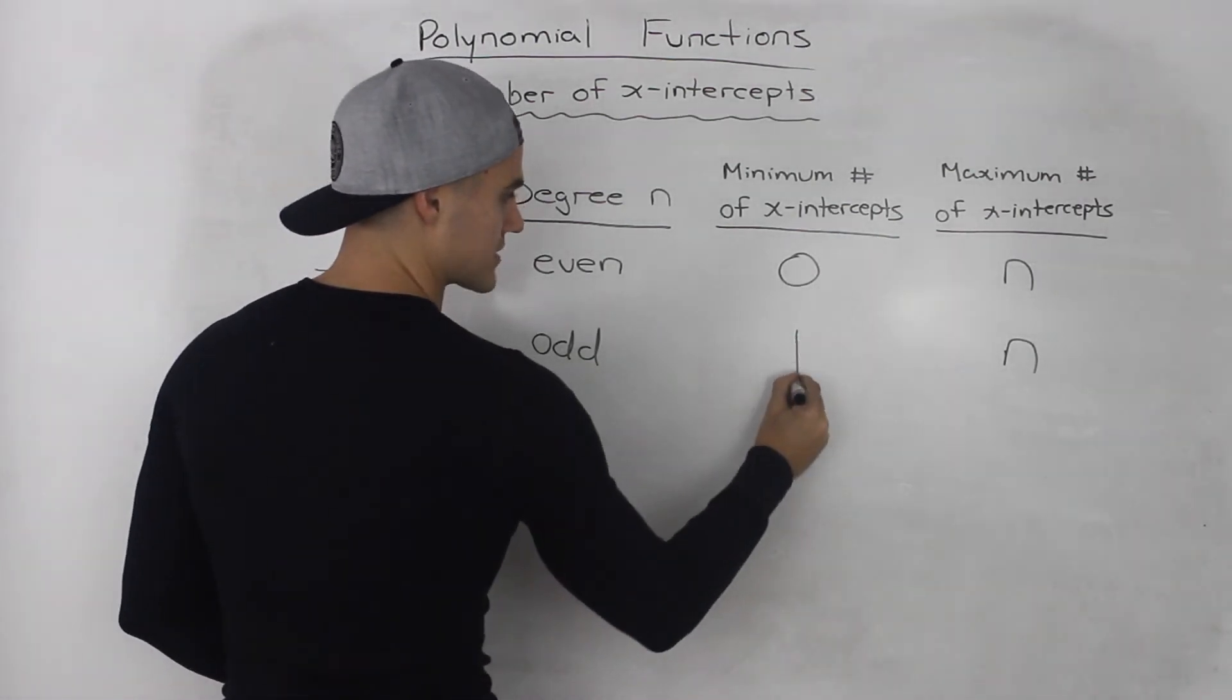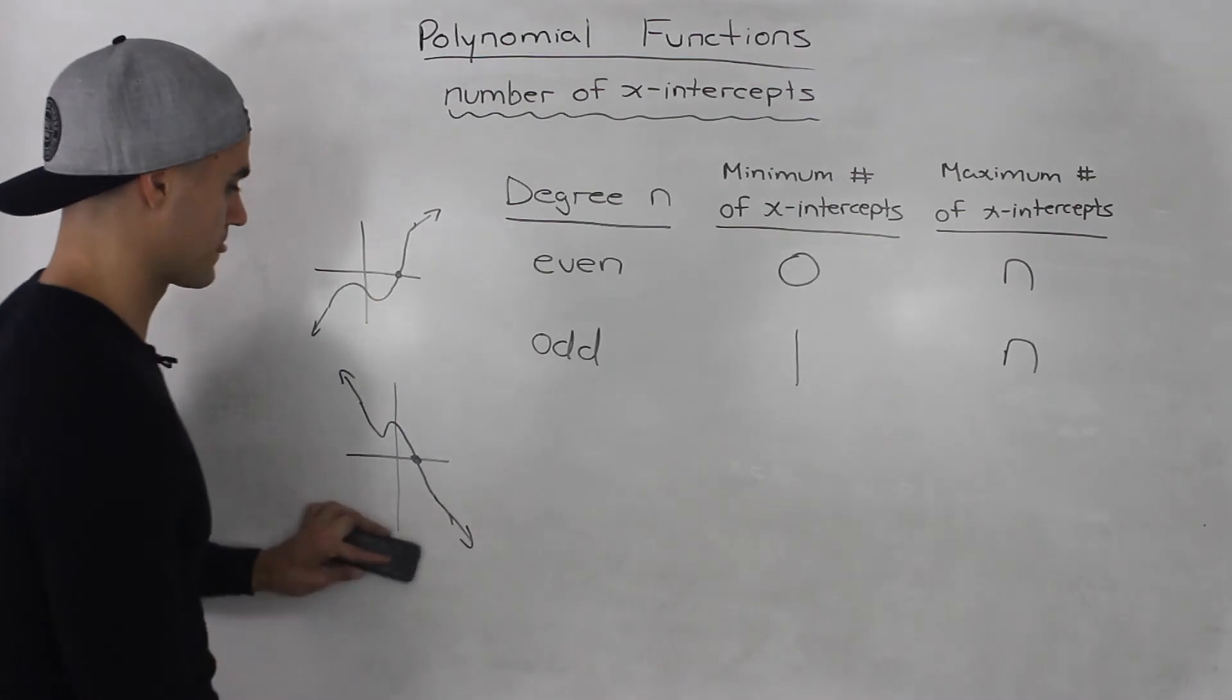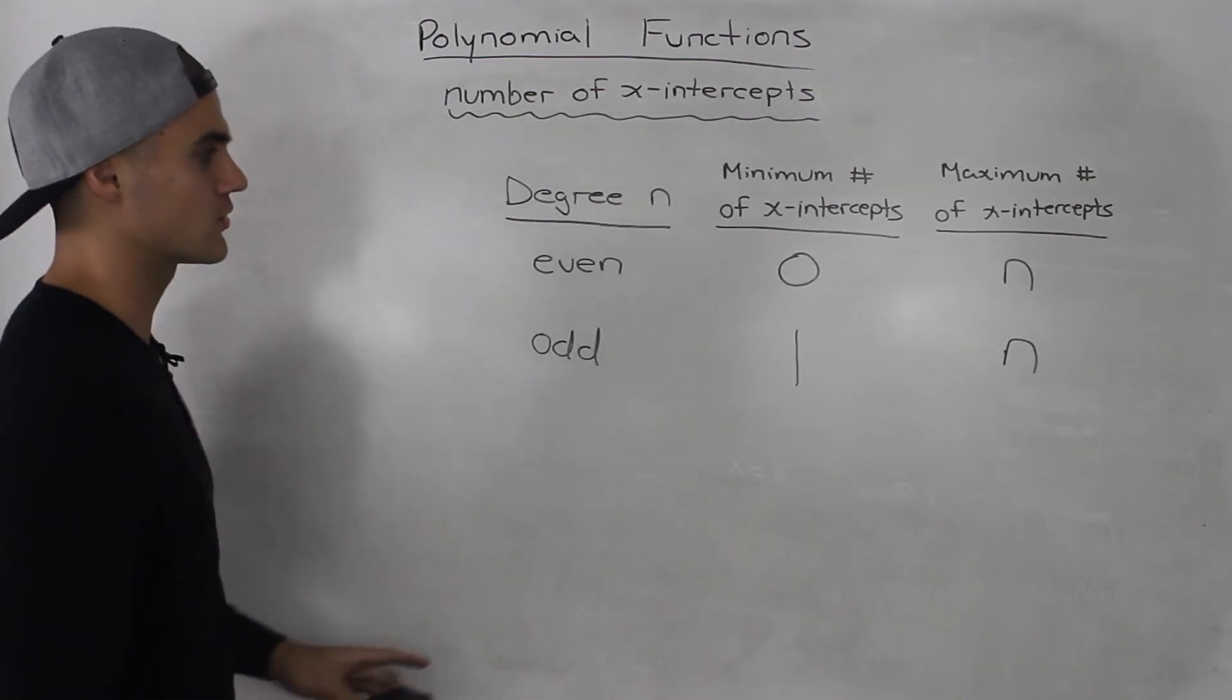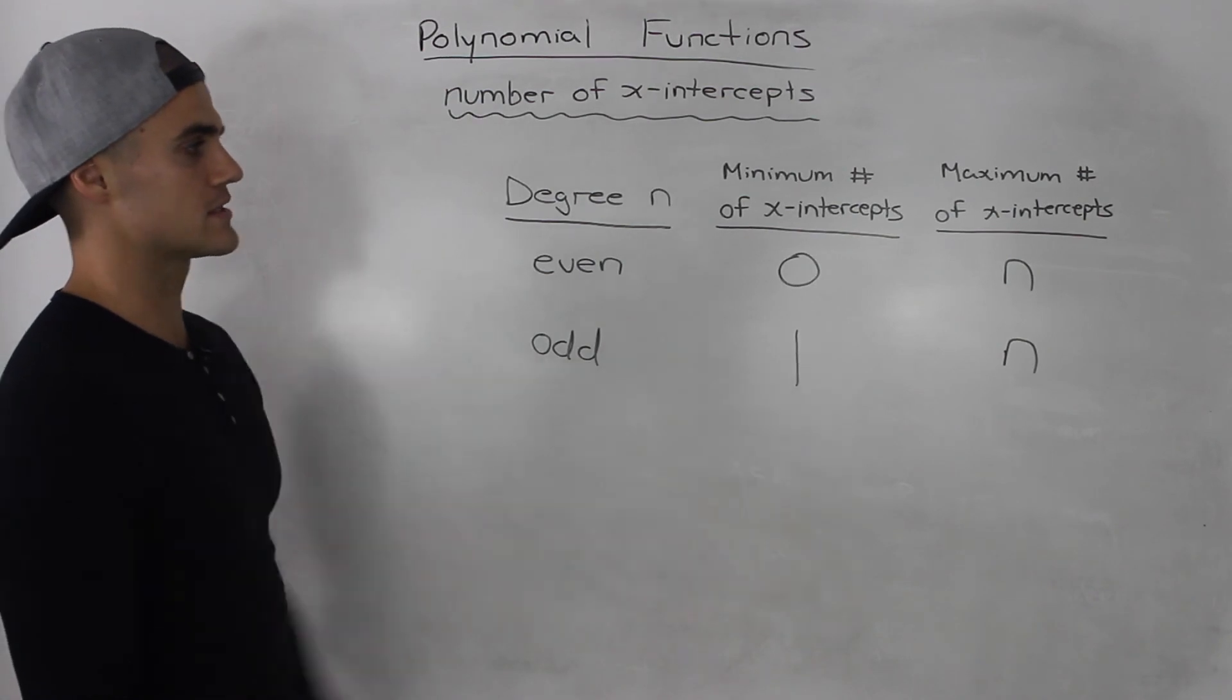So the minimum number of x-intercepts for an odd function, or a function that has an odd degree, is always 1.